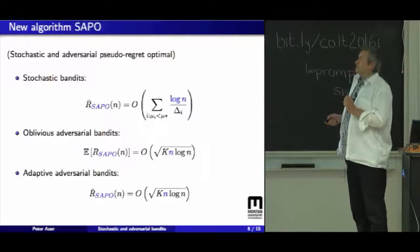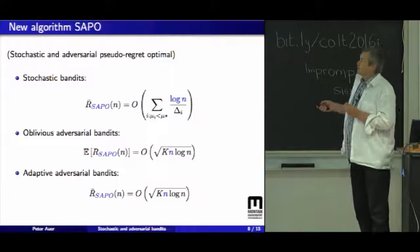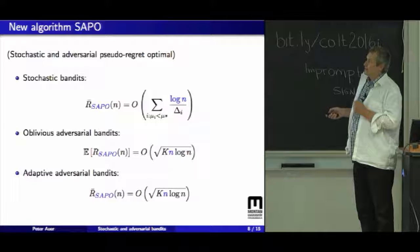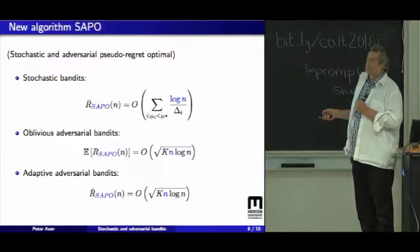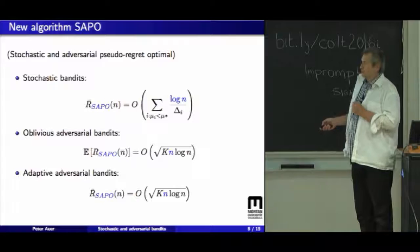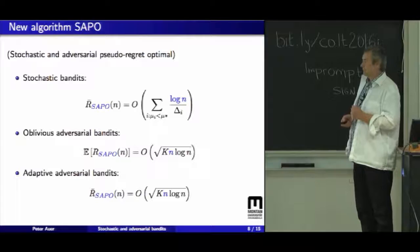On the other hand, we show that we have an algorithm which has logarithmic regret for stochastic bandits, which has for oblivious bandits the square root n regret, and for adaptive adversaries, we can bound the pseudo-regret, which is a little weaker than the expected regret for adversarial bandits.